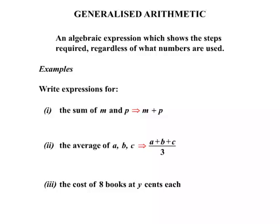Example 3, the cost of eight books at Y cents each. If we have eight books and they're each costing Y, then our total cost will be eight lots of Y, or eight Y. Just make sure we have our units, in this case it's cents. So the cost for eight books at Y cents each would be eight Y cents.